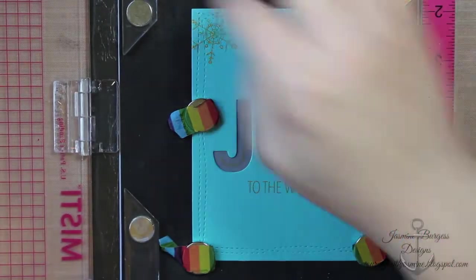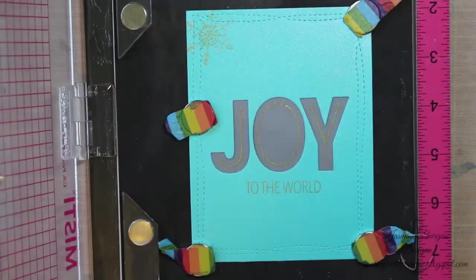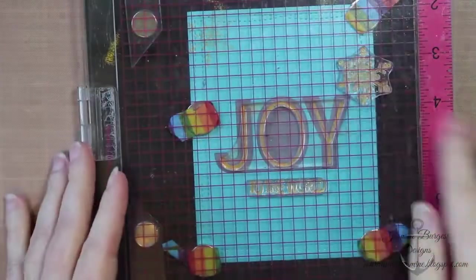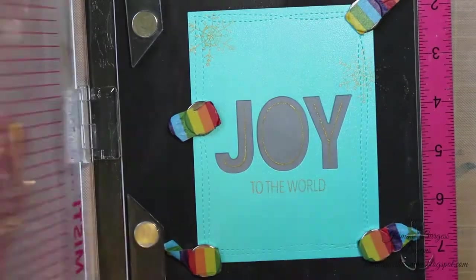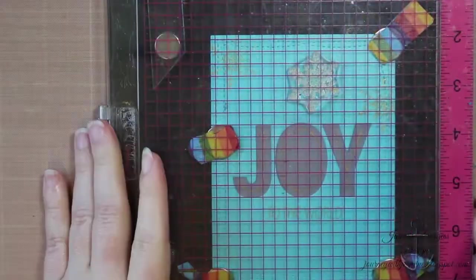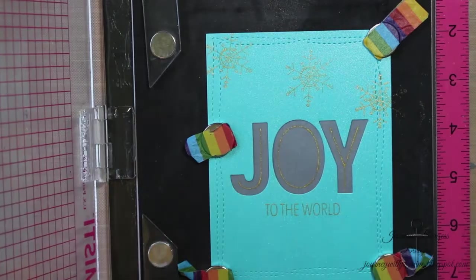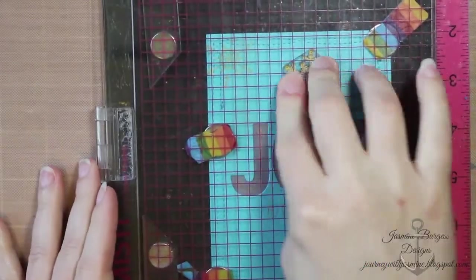When you use clear embossing powder over the top it kind of dulls it a little bit. So I actually prefer this ink just by itself. This is a pigment ink so it does take I don't know between 15-20 minutes to dry but it will dry without smearing, unlike other pigment inks that you pretty much have to heat set them or they never dry. This one does.